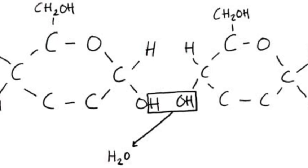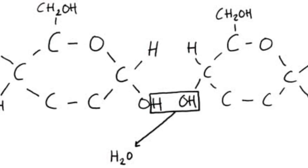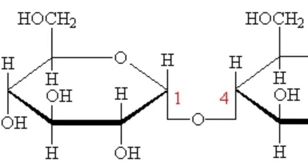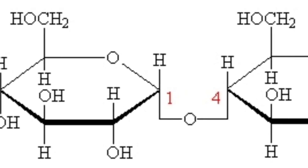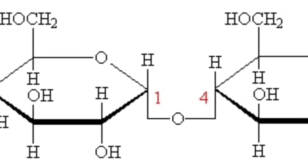Monosaccharides can be joined through condensation. When this happens, a water molecule is released. The two molecules are joined by the remaining oxygen. This bond is a glycosidic bond.